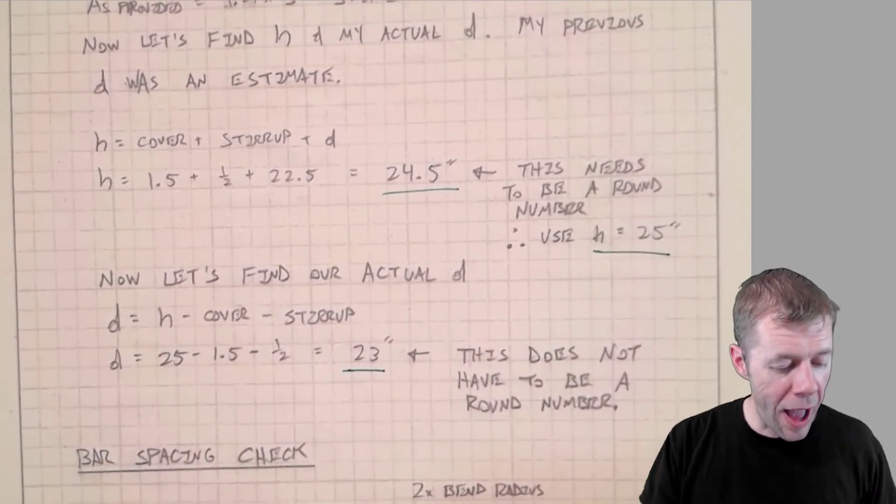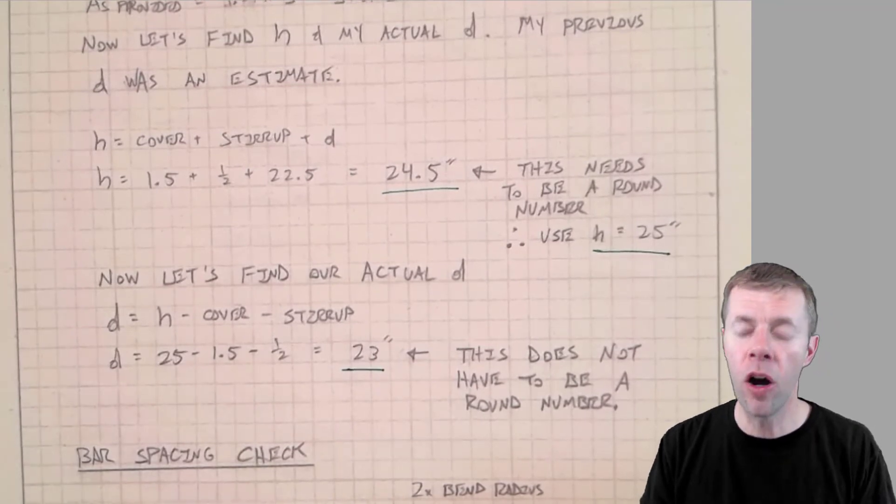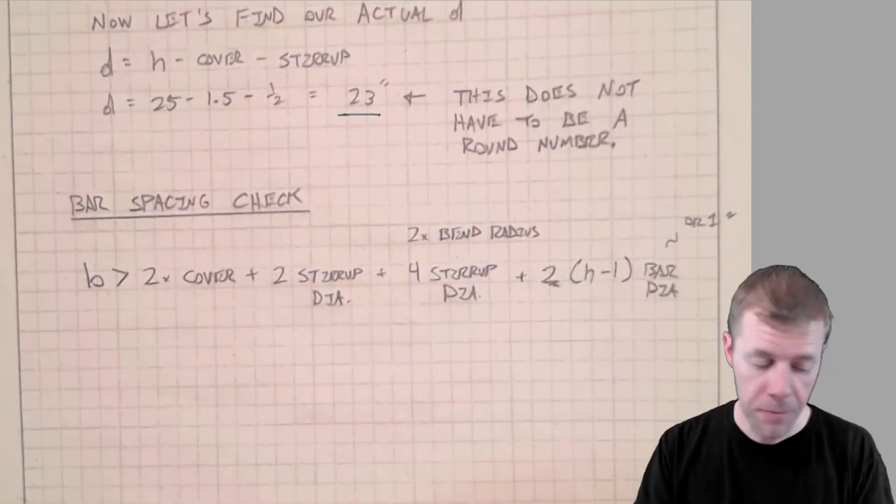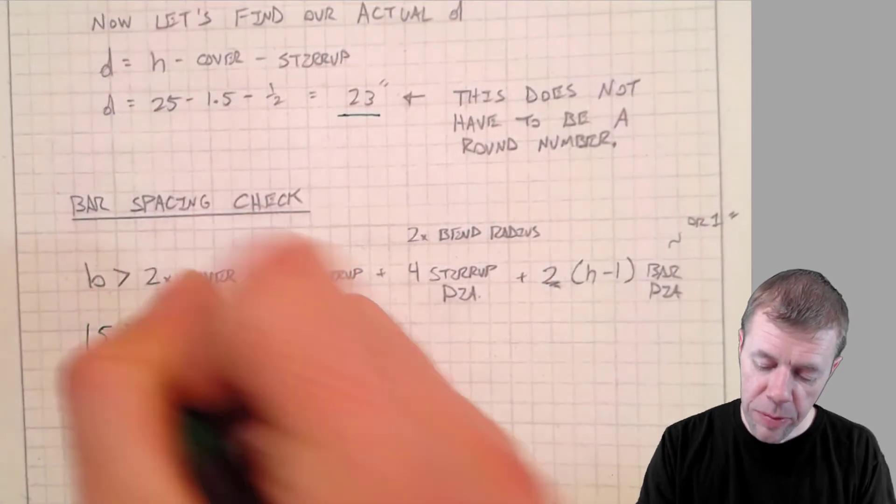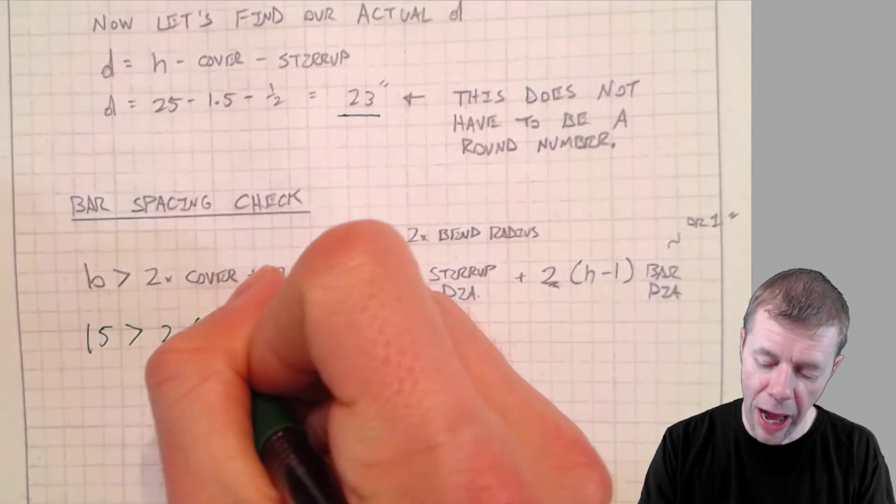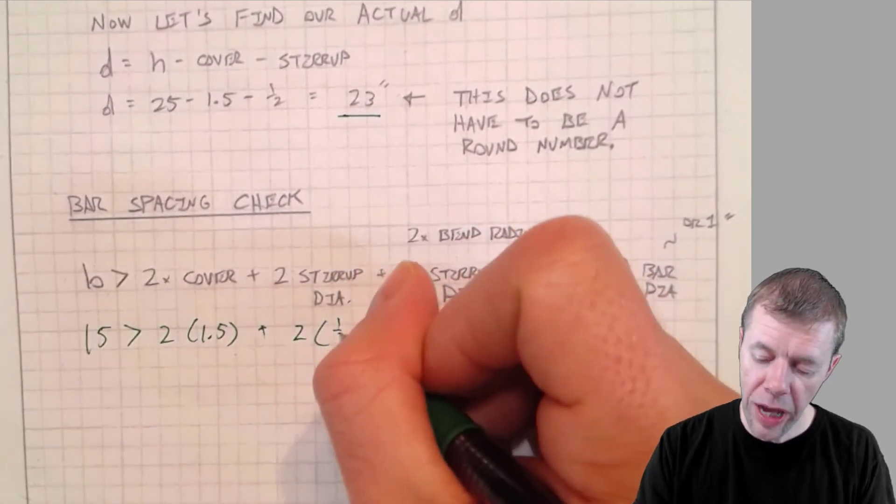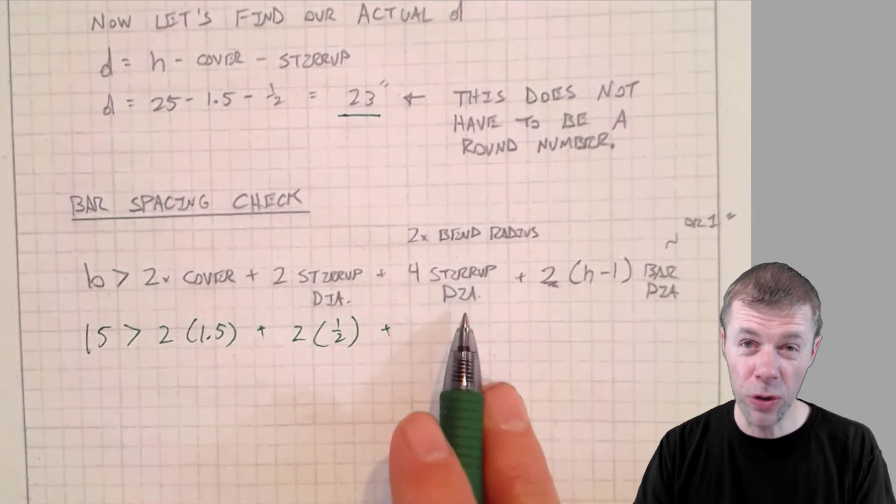Now, we're going to have a check on the spacing of our beam to make sure that we can fit all our bars in there. So our B, which happens to be 15 inches, has to be two times the cover, which is one and a half, plus two times the stirrup diameter, which is a half, plus two times the bend radius, which has to be four stirrup diameters.